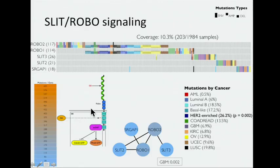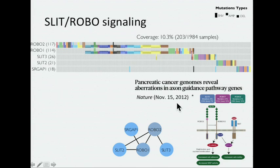Here's a nice new one — slit-robo signaling. We see both the slit ligand, the robo receptor, and CERGAP1, the Rho-GTPase, so we're getting the complete part of this signaling network. Not too much enrichment here across cancer types except for AML. Interestingly, we were doing this analysis a couple months ago without knowledge of a paper that many of you now know. Some in the audience contributed to this paper that came out in Nature just two weeks ago that highlights slit-robo signaling as important in pancreatic cancer, including some of these same genes, although also including robo-3 in that analysis.